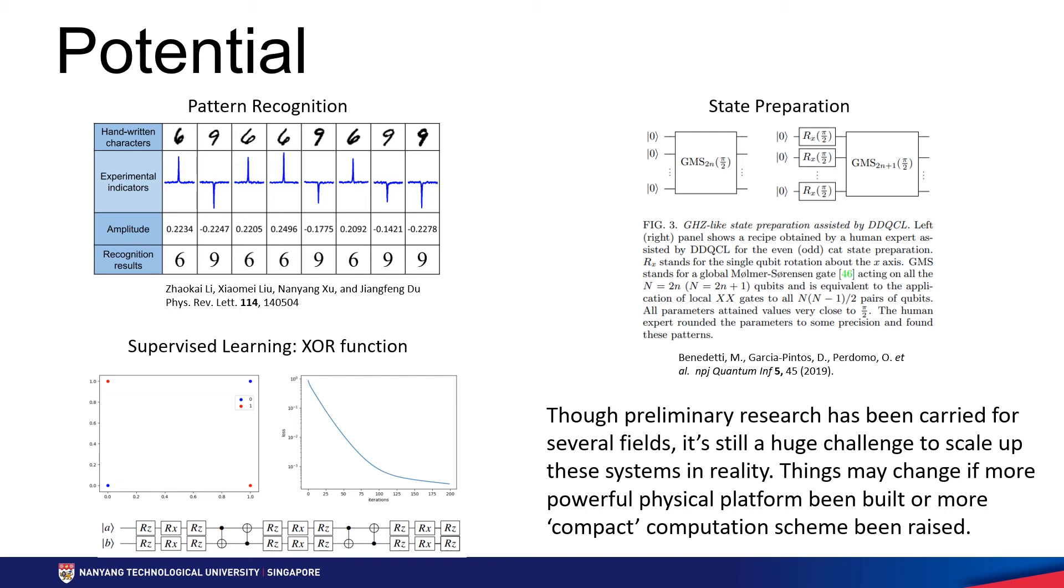Quantum state preparation is also a good question to look into. To prepare a given multi-qubit state is hard because it's very difficult to describe or duplicate. However, with quantum machine learning we can get a chance to let the system learn to describe the state by itself and prepare a duplication.